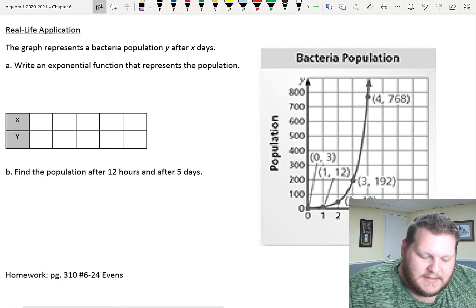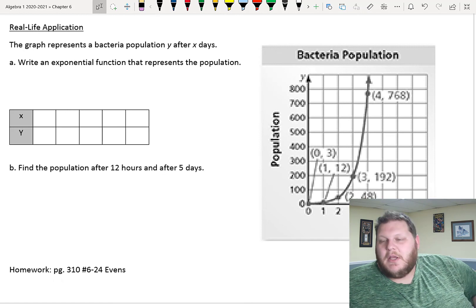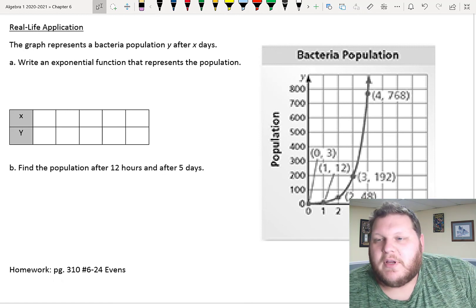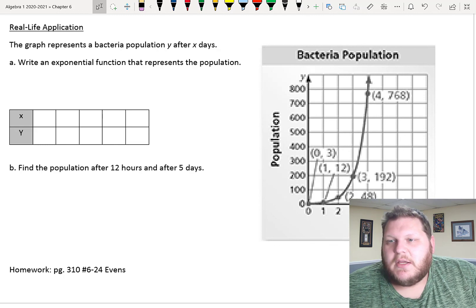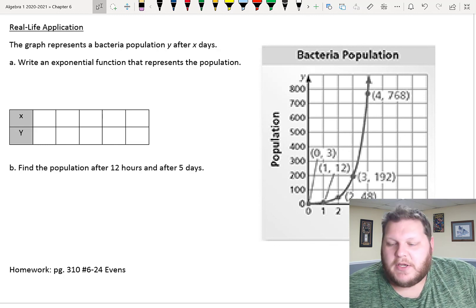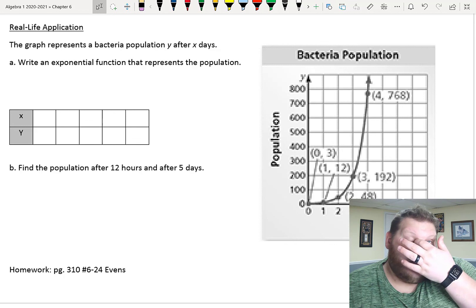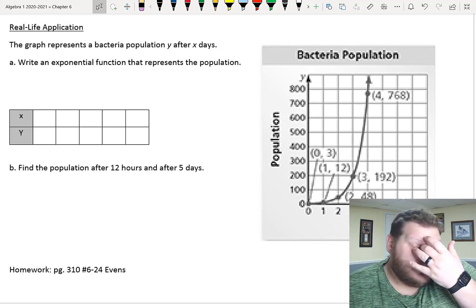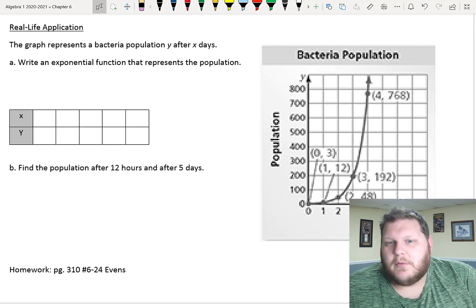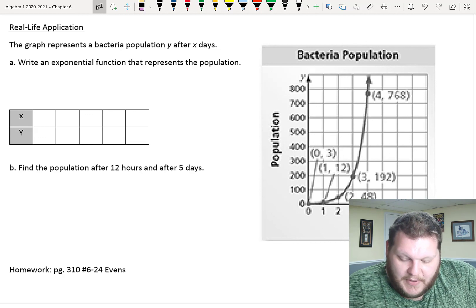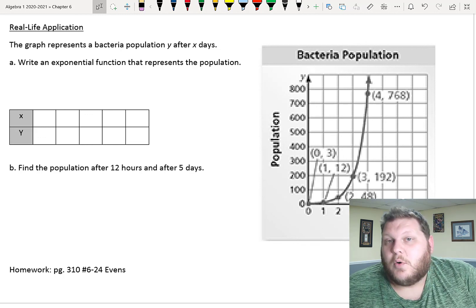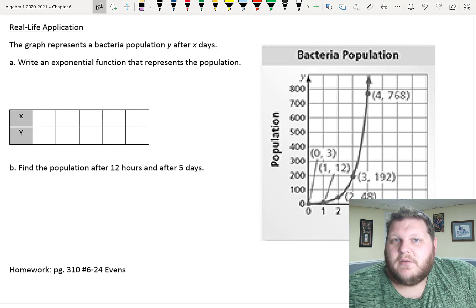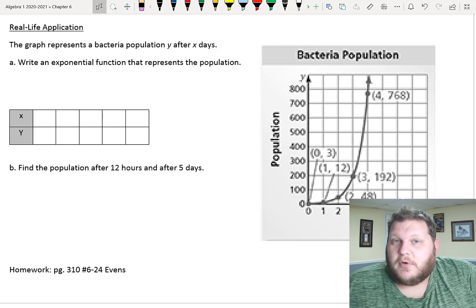All right, last but not least, a real-life application problem. So, in this problem, we are given a graph that represents bacteria growth over time. Here, our y-value is the population of the bacteria, and our x-value is time. So, it's the number of days that have gone by. So, in this, my graph gives me five different coordinates, five different ordered pairs, which is the bacteria population for five different days.